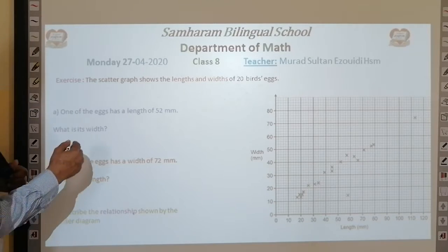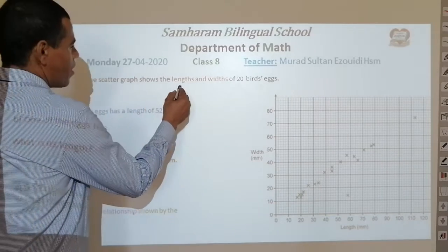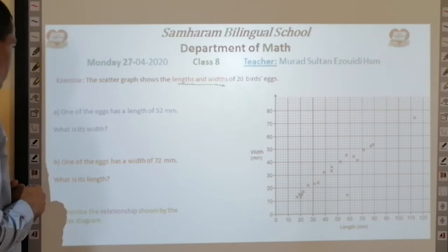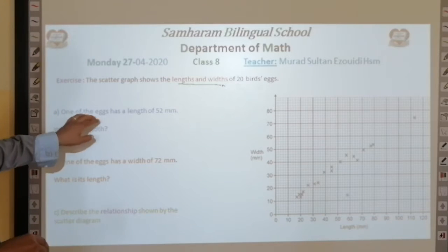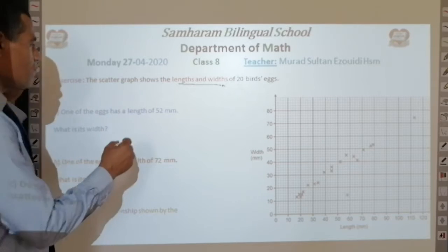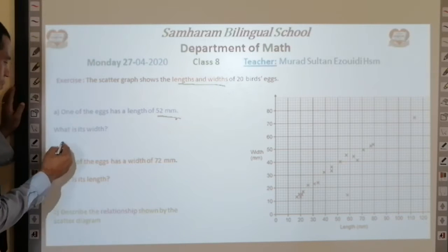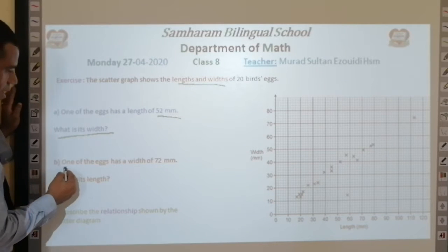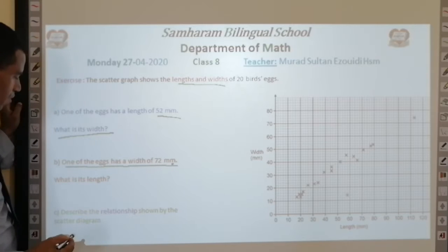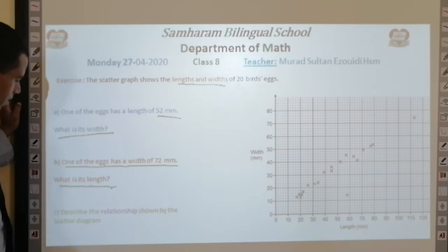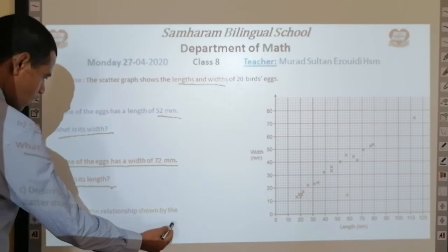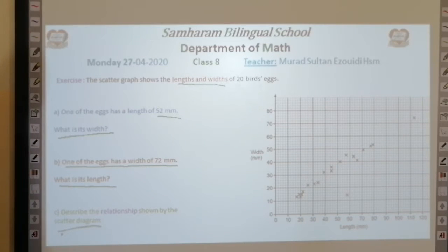As a side note, this scatter graph shows the length and width of 20 birds' eggs. One of the eggs has a length of 52 mm — what is its width? One of the eggs has a width of 72 mm — what is its length? Describe the relationship shown by the scatter graph.